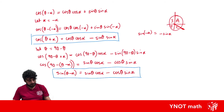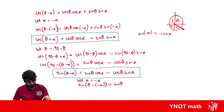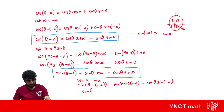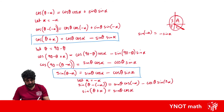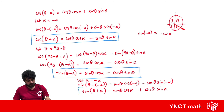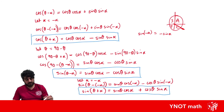To get our last sine expression, we again let α equal −α in sin(θ − α) = sin θ cos α − cos θ sin α. This gives sin(θ + α) = sin θ cos(−α) − cos θ sin(−α). Since cos(−α) = cos α and sin(−α) = −sin α, we get sin(θ + α) = sin θ cos α + cos θ sin α.